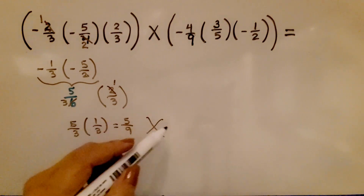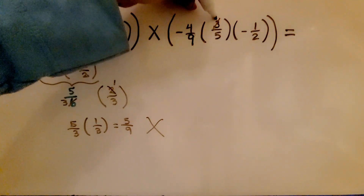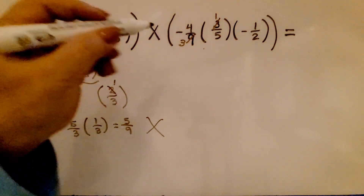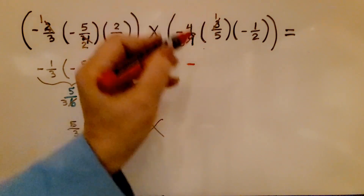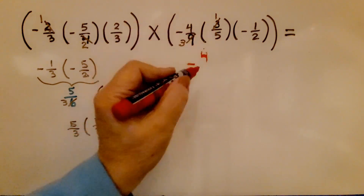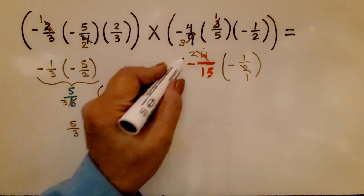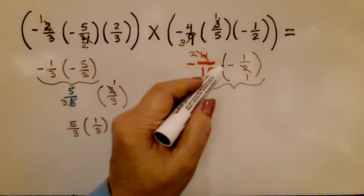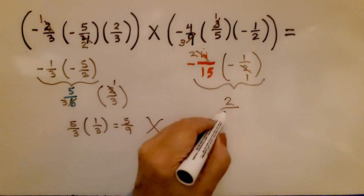Now we multiply positive five-sixths by two-thirds. I can see one two here and three twos there — cross-cancel. We have five-thirds times positive one-third, which equals five-ninths. That is a positive five-ninths. On the other side, I see one three here that can cancel with three threes. Negative times positive means a negative partial product, and four times one is four over three times five is fifteen — giving negative four-fifteenths.